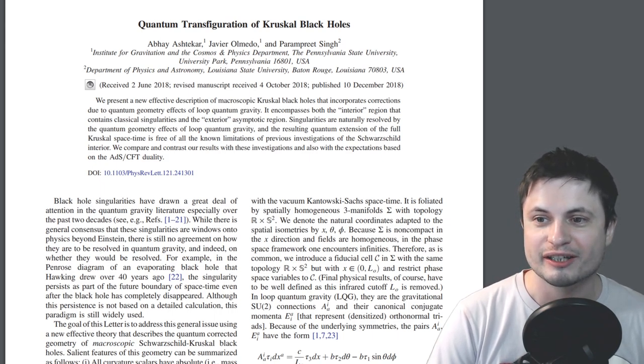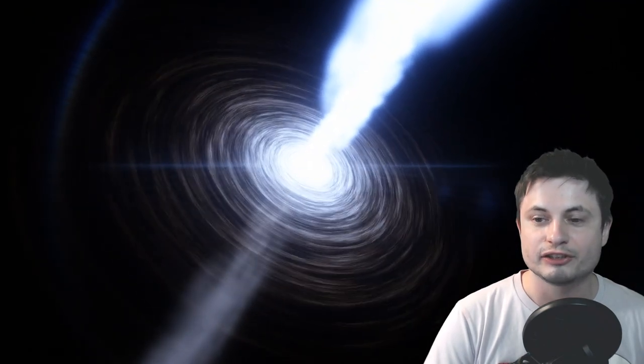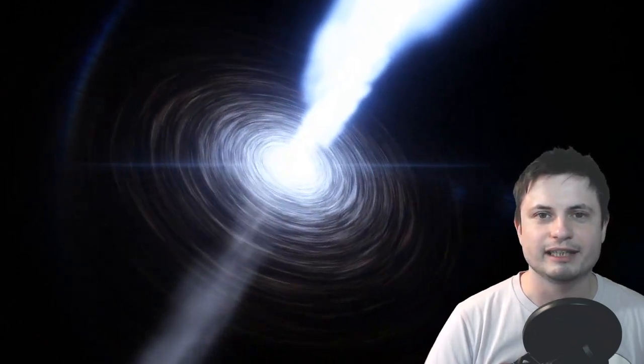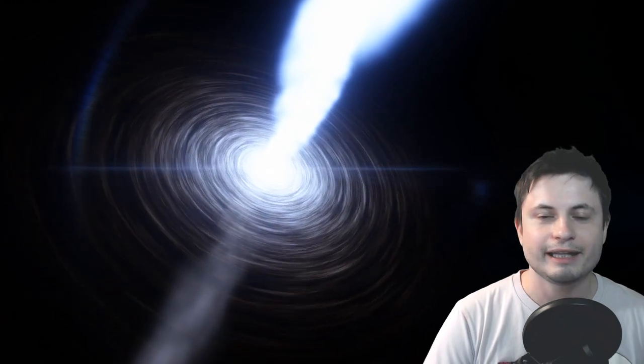Their names are Abhay Ashtekar, Javier Olmedo, and Parampreet Singh. The two papers that they published essentially help us to finally mathematically understand what might be happening inside the black holes.